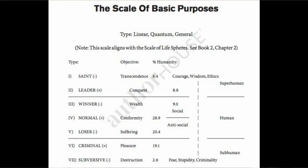Each of the 35 scales has a different axis, represented by the dotted vertical line, which tells you what we are measuring with this scale. Just as a yardstick measures inches, I'm giving you in each scale a yardstick by which to measure human activity. At the top of this continuum we have courage, wisdom, and ethics — so a saint is the embodiment of courage, wisdom, and ethics.